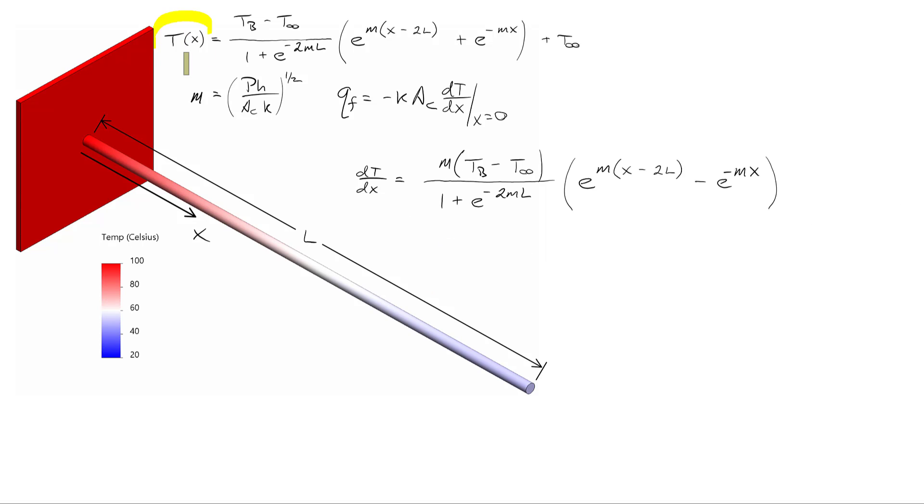To figure out our temperature gradient, we'll first differentiate T with respect to x, resulting in this equation. And we need to know the gradient at x equals zero, so in that case, something a little bit simpler.